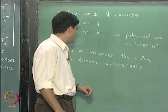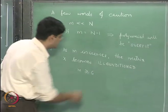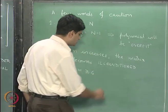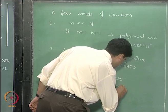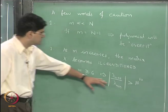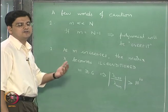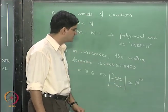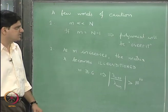Usually, when m becomes greater than or equal to approximately 6, the matrix becomes fairly ill-conditioned, meaning lambda max divided by lambda min starts becoming greater than 10 to the power 10. Under these conditions, if you try to invert the matrix X transpose X, the inversion algorithm should give a warning that this matrix is ill-conditioned and we may not be able to rely on the results obtained from this matrix.